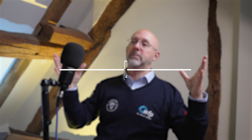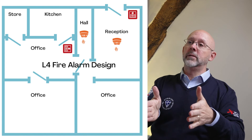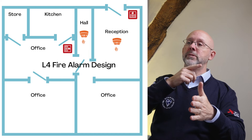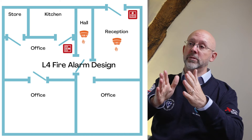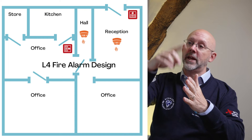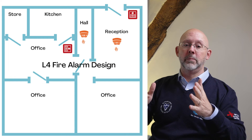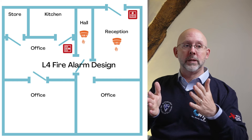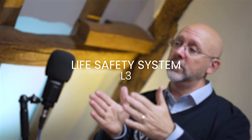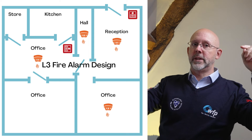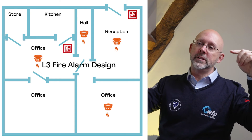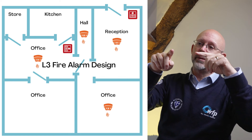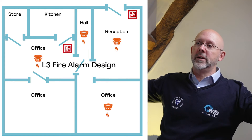L4 is like an office building or a school where you put smoke detectors along the corridors only — none in the rooms, just in the corridors and on the stairs covering the escape route to the door. L4 didn't exist until about five or six years ago. L3 is the same as L4 plus detectors in the rooms that open onto those escape routes. Smoke detectors cover a seven-and-a-half metre radius, but with L3 you're only concerned about smoke leaking out of a room into the escape route.